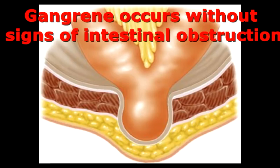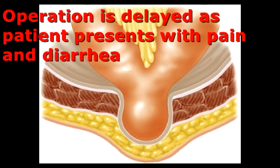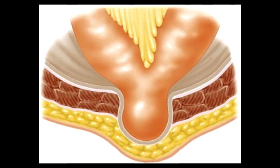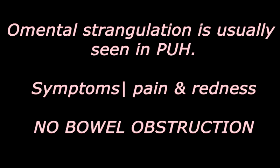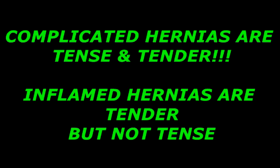An inflamed hernia is where the contents are inflamed, like appendicitis or oophoritis. Bowel strangulation can occur without any symptoms of obstruction, especially in a Richter's hernia where only a small portion of the bowel circumference is involved — gangrene and perforation occur before the operation is undertaken. Omental strangulation presents with pain and redness with local abscess but no intestinal obstructive symptoms. In an inflamed hernia, the hernia is tender but not tense.